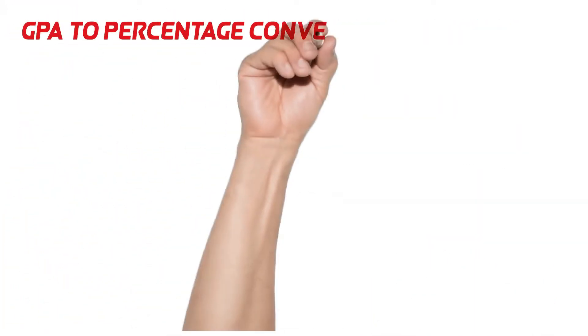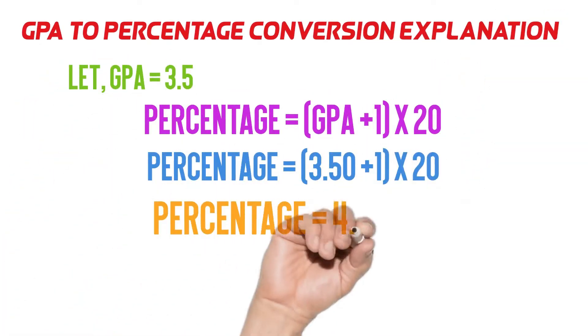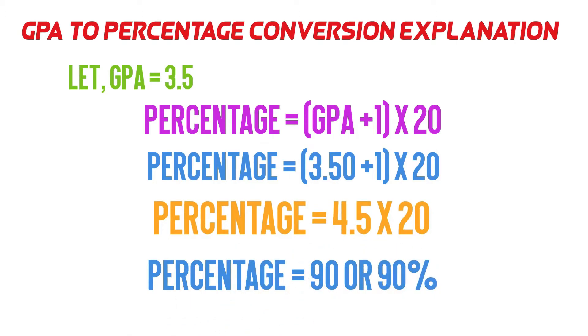We put GPA number 3.5 in our GPA to percentage conversion formula. When 3.5 plus 1 then we get 4.5. When 4.5 multiply with 20, we get 90%. In this way, we convert GPA into a percentage.